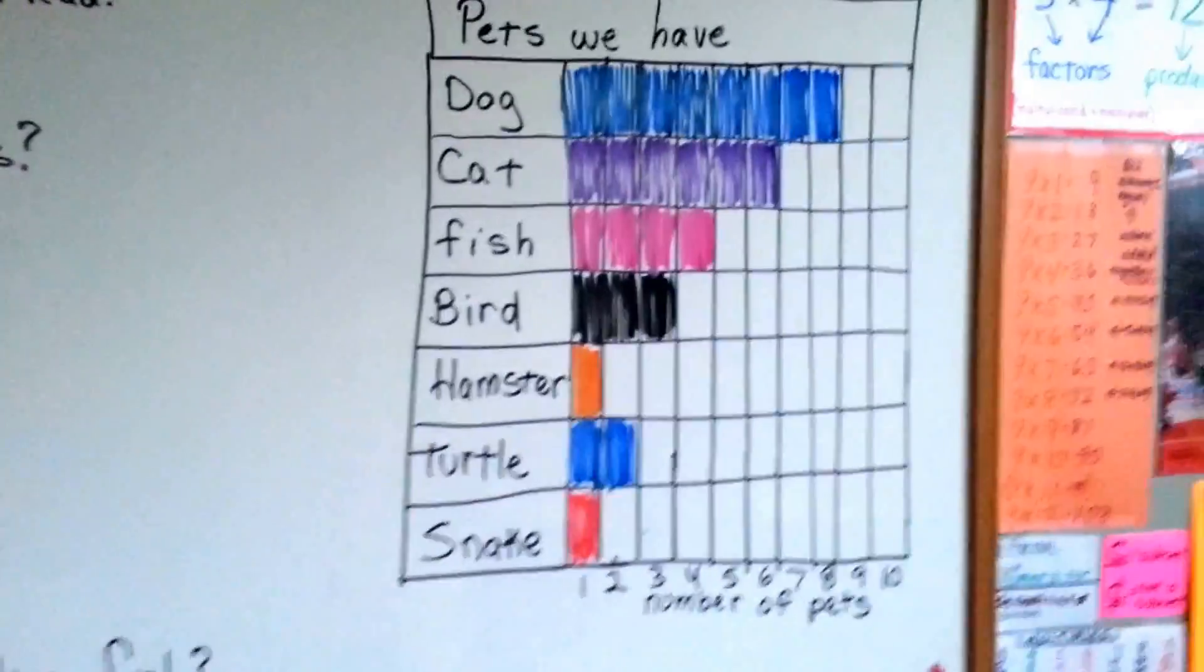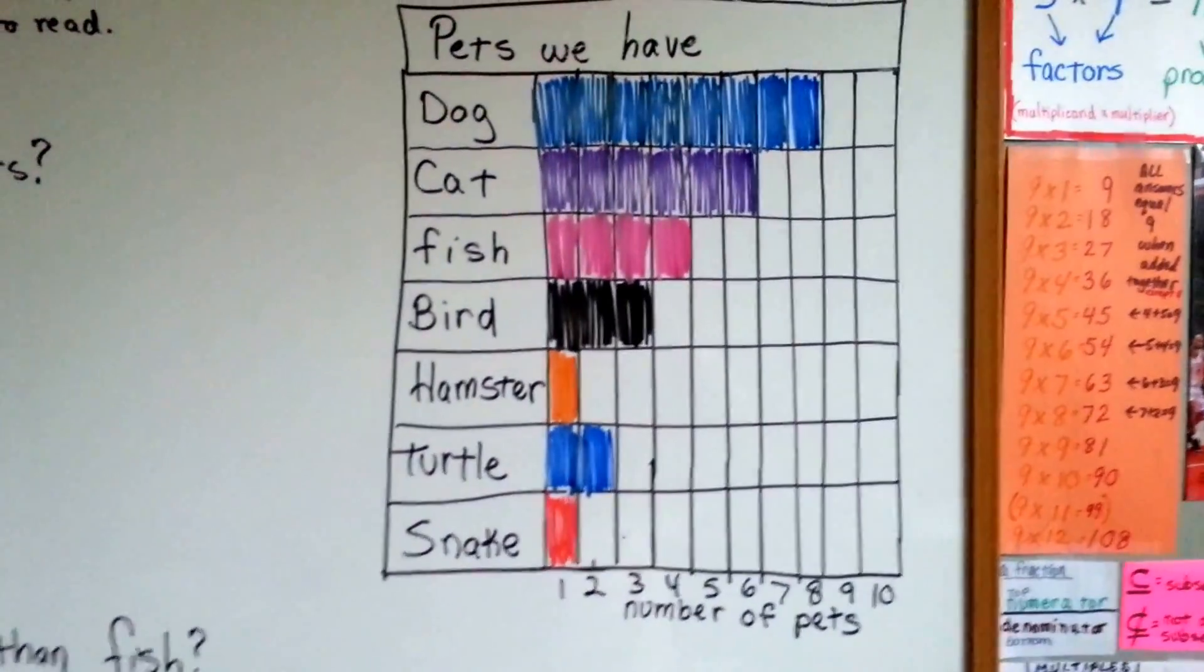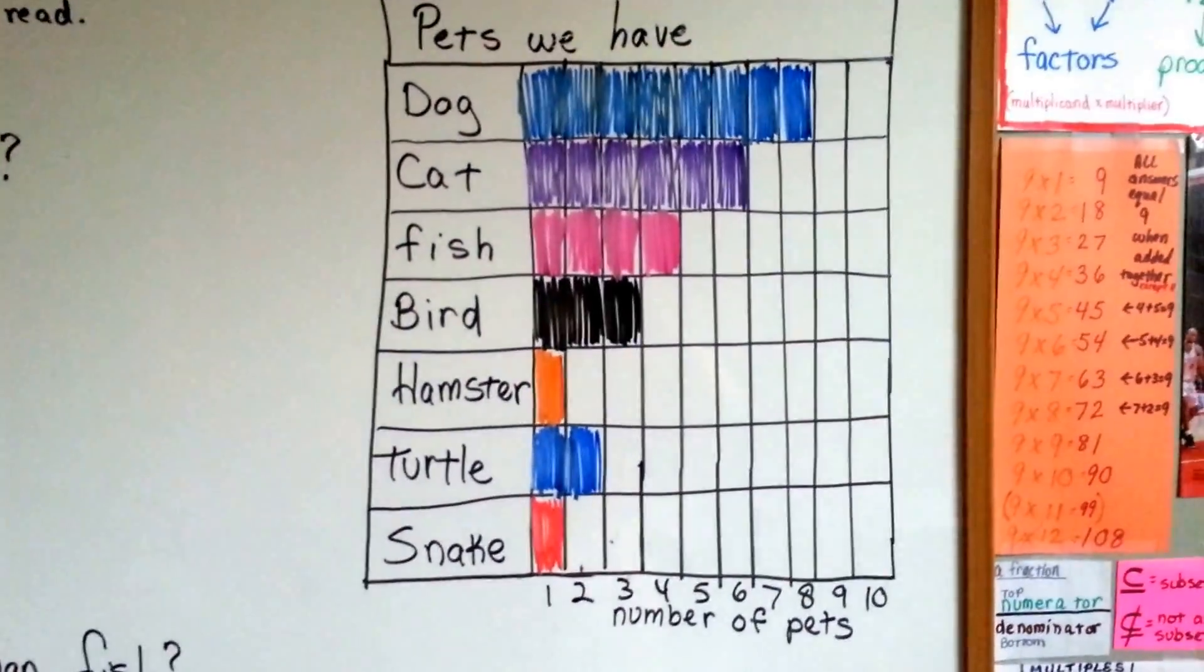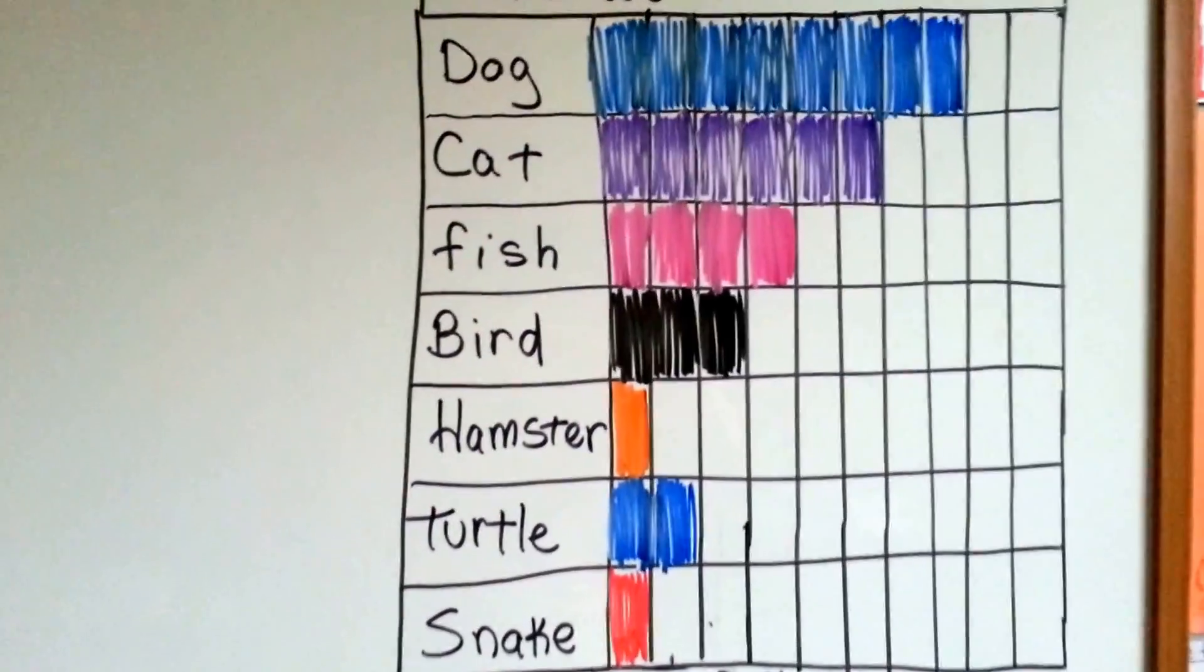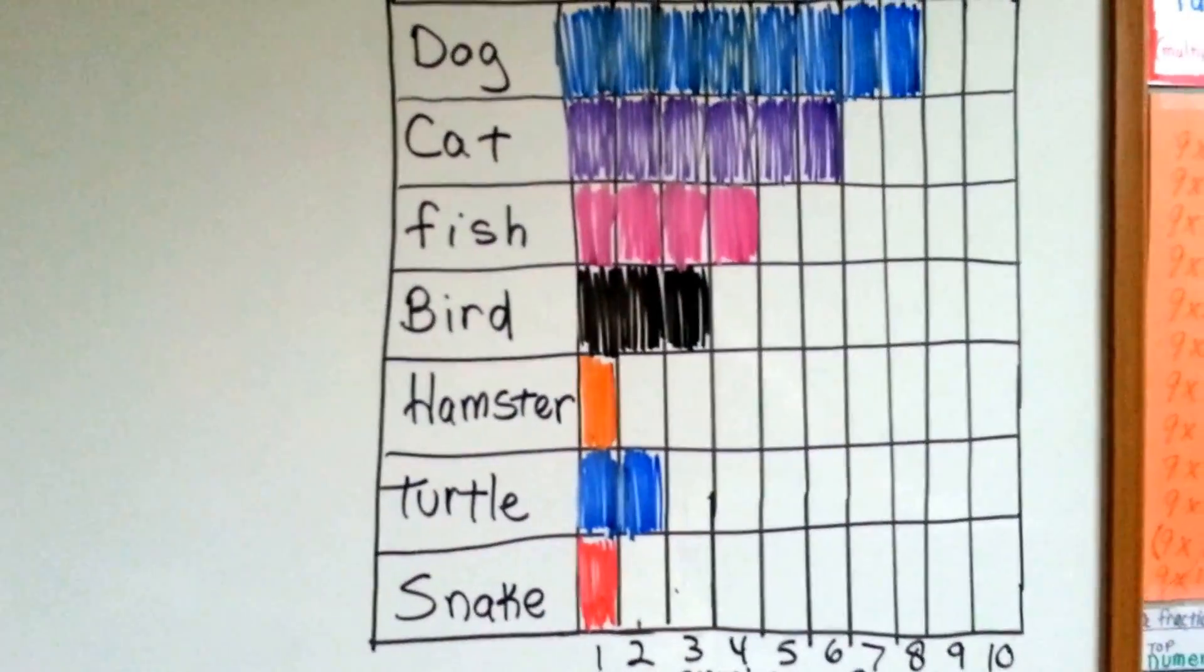I have a bar graph here of some students in a classroom and the teacher asked which pet everyone has. Each child raised their hand and the teacher counted them.